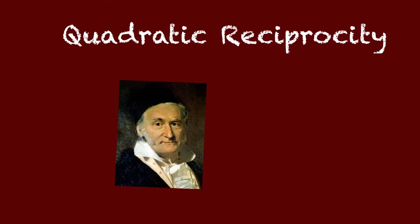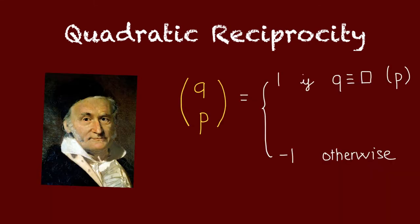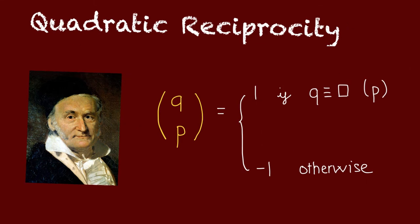And there is indeed a way to turn this condition mod p to a condition modulo q. This is done via the so-called quadratic reciprocity. For convenience, let us introduce a new notation, the Legendre symbol. We define it to be 1 if q is congruent to a square mod p and minus 1 otherwise.